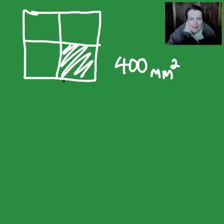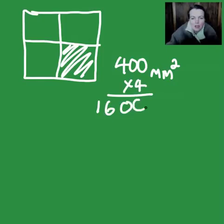400 millimeters squared. Now let's do one. If that's 400, that's 400, that's 400 and that's 400. So all together is times four, which makes 1600 millimeters squared.